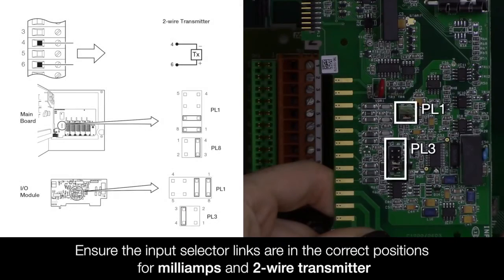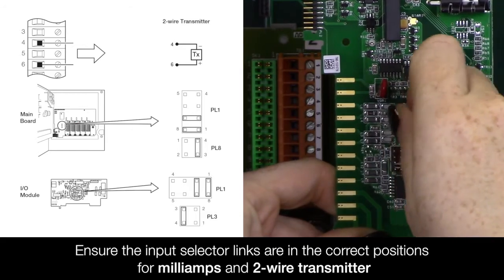Ensure the input selector links located on the I.O. module, or in the case of input 1 on the mainboard, are in the correct positions for milliamp and two-wire transmitter.